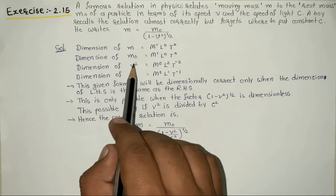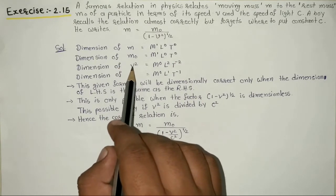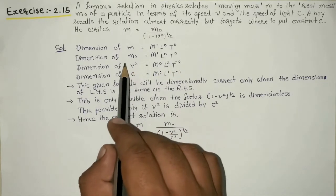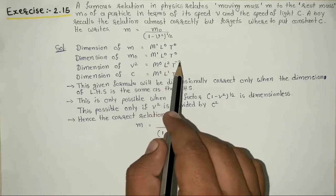v square, where v is speed with dimension L¹T⁻¹, so v square has dimension M⁰L²T⁻².